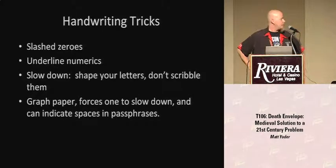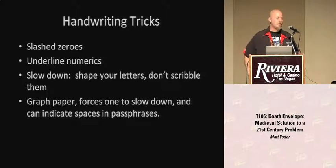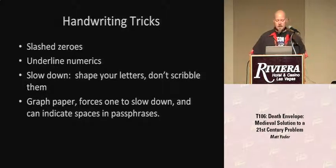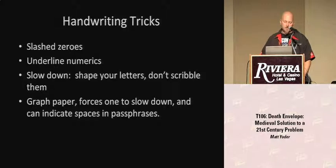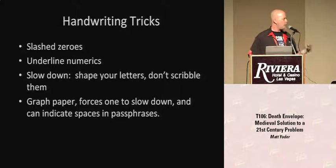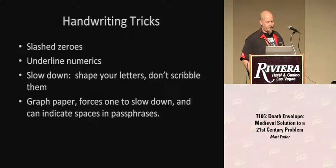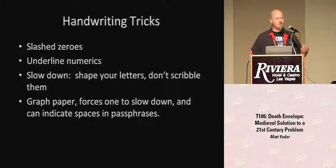Some thoughts if you're going to use handwriting: obviously you want to slash your zeros so people know they're zeros. Frequently, just underline the numerics so people know if something's a one or an L. Go ahead and slow down so you're not writing too fast and people can read your letters. Once they've opened your envelope, they can't necessarily know what you meant when you wrote that down. Another good one is graph paper — this can indicate spaces, it means there's supposed to be a letter there, and it slows you down.